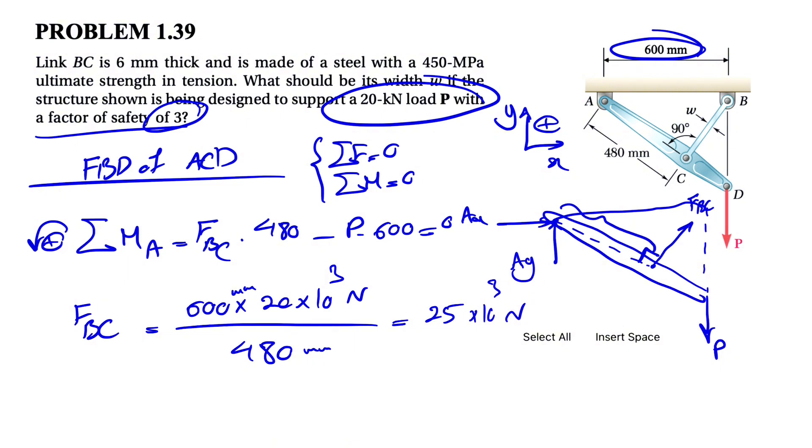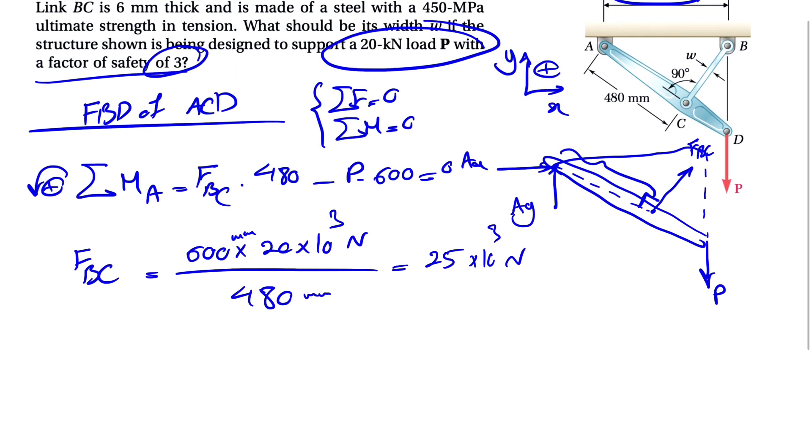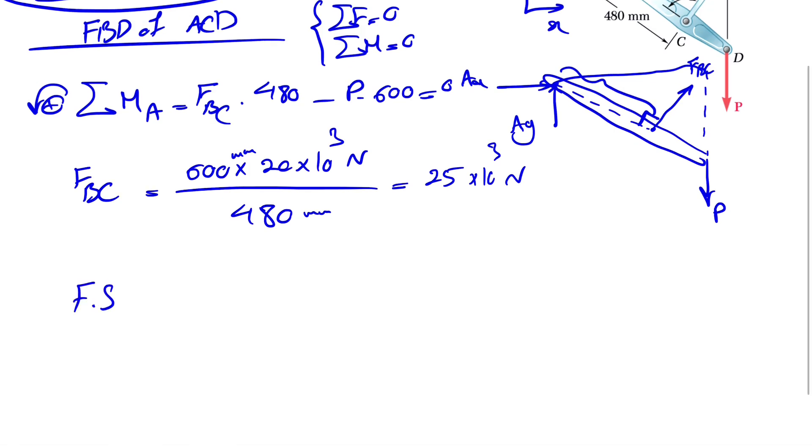So now that we have force BC, and if we get back to the question, we have a factor of safety of 3. And we know factor of safety is equal to the ultimate force in here over the force that we found. So the ultimate force in here would be 3 times FBC, 25 times 10 to the 3, which will be 75,000 newton.